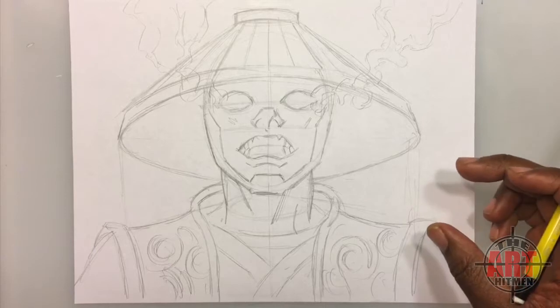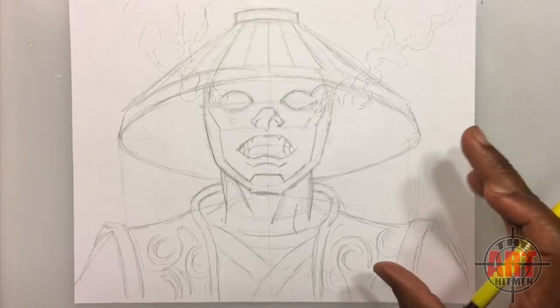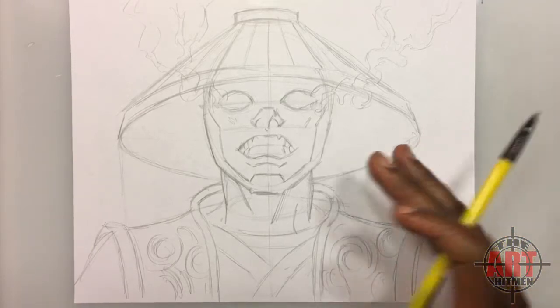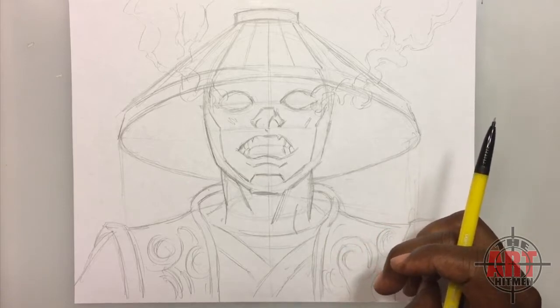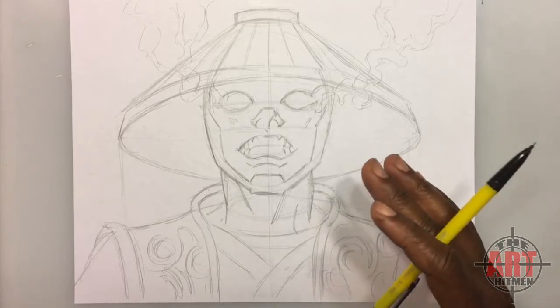Alright, now if you followed me up to this point, we've just drawn in Raiden's hat, his face, the electricity and everything. So I'm going to clean it up, erase it, and just finish it out.